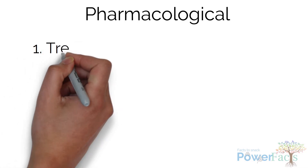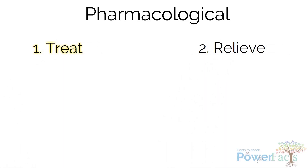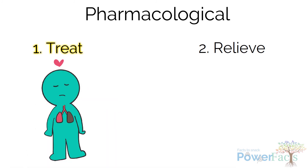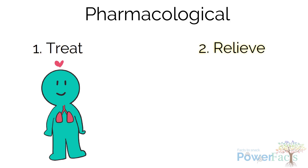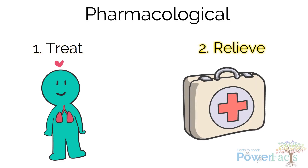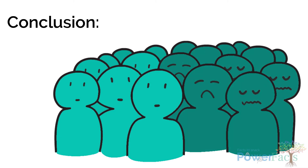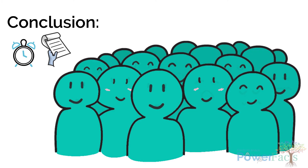Moving on to pharmacological measures, there are two main treatment goals. Number one: look for reversible causes and treat the underlying conditions, for example providing antibiotics for lung infections. Number two: relieve dyspnea by using opioids such as morphine and fentanyl, and/or benzodiazepines. In conclusion, dyspnea is a common symptom in palliative patients, and timely assessment and appropriate management helps patients achieve the best possible quality of life.